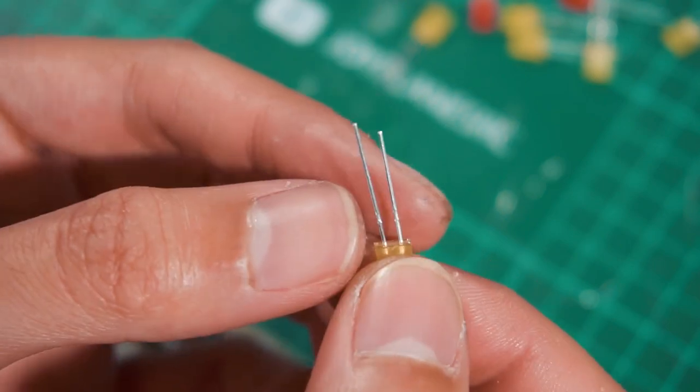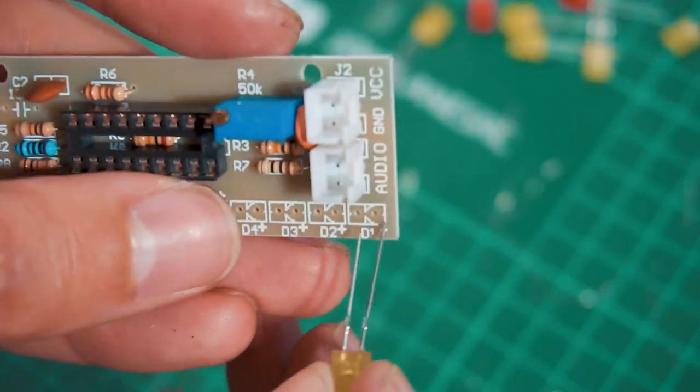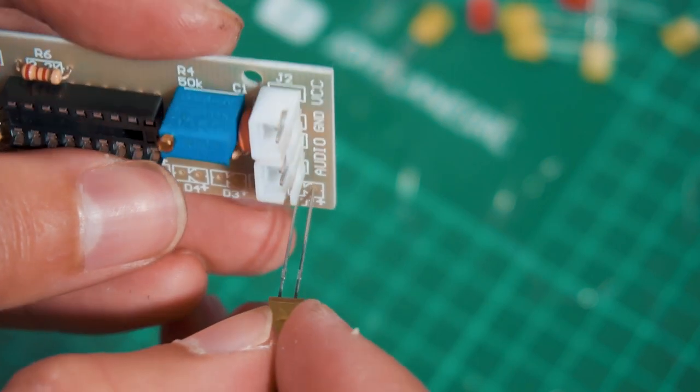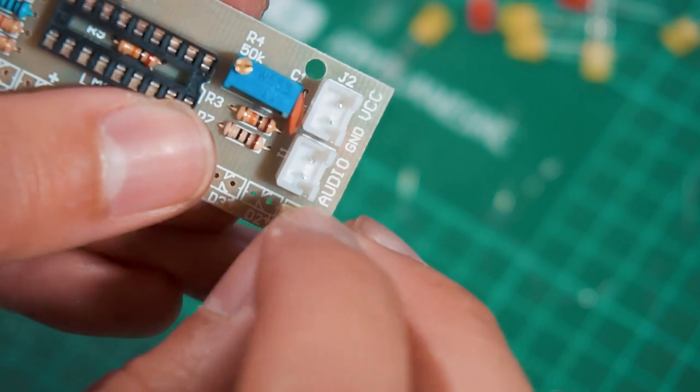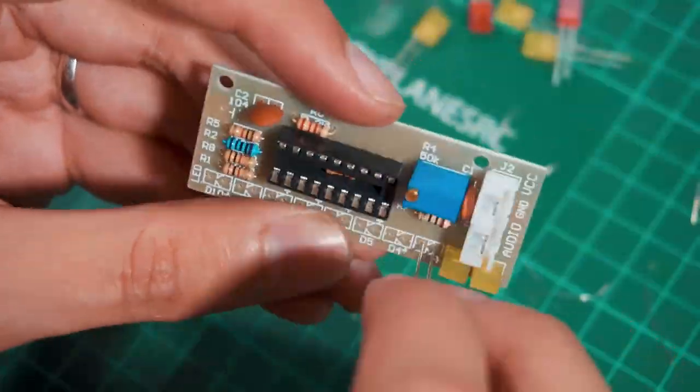Now when it is time to put the LEDs, we have the markings of positive and negative on our PCB. It's common knowledge that the LED has a long and a short lead, so the long one is the positive or anode and the short one is the cathode or negative.